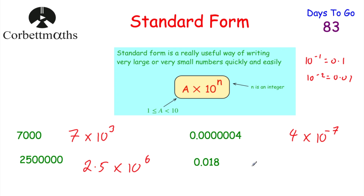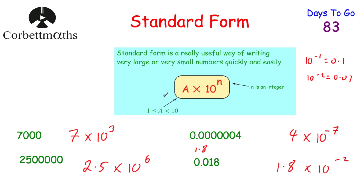Using the same approach for 0.018: the number at the front is 1.8 (since it must be between 1 and 10), and there are 2 zeros in front, so it's 1.8 × 10^(-2). To recap: starting from 1.8, you'd need to move the digits 2 columns to get to 0.018, which confirms the power of negative 2. That's how you write large and small numbers in Standard Form.